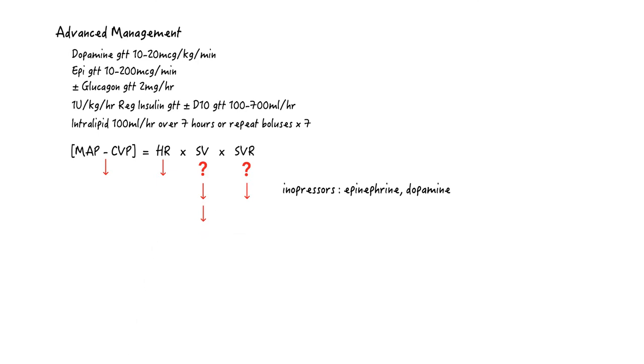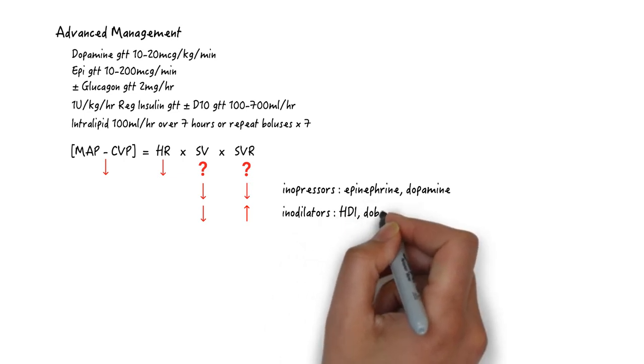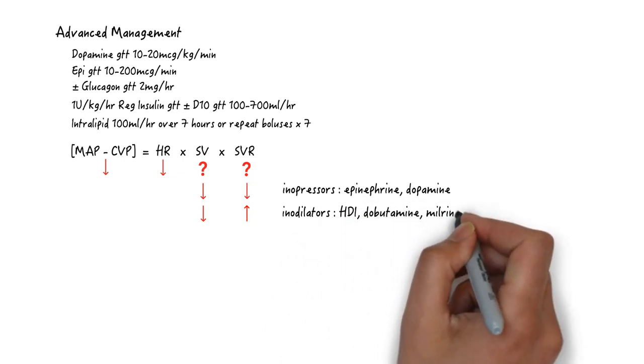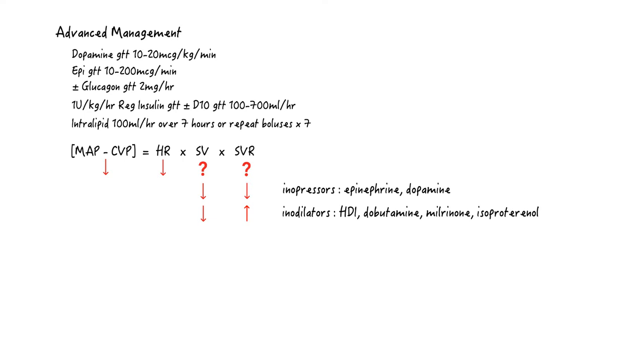The second scenario is that the stroke volume is low, but the SVR is high. An inodilator is an even better agent here. Keep escalating insulin boluses and drip dose. Consider adding milrinone or dobutamine and backing off of the epinephrine.